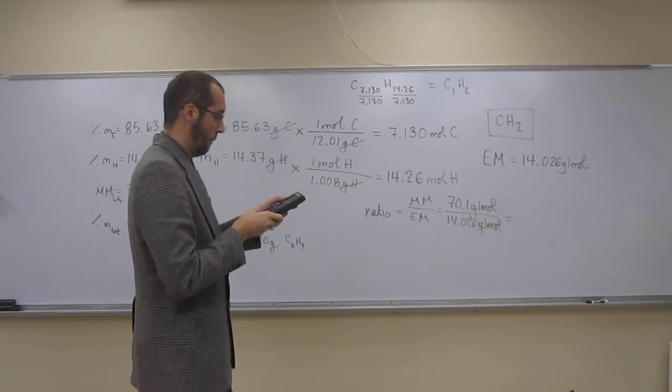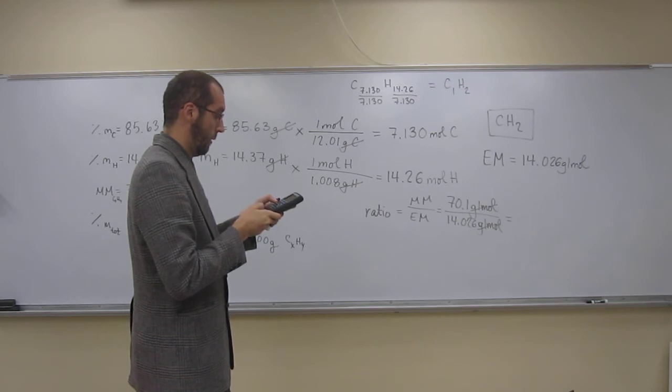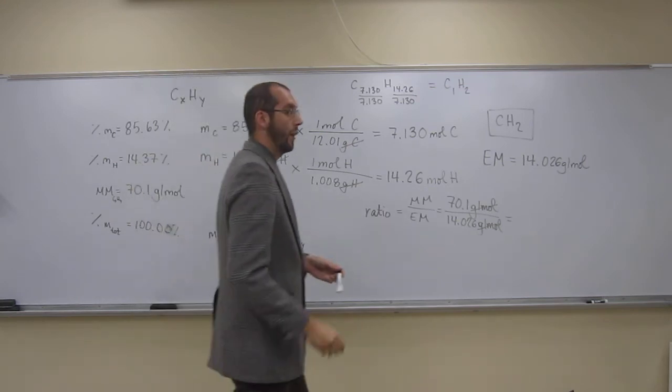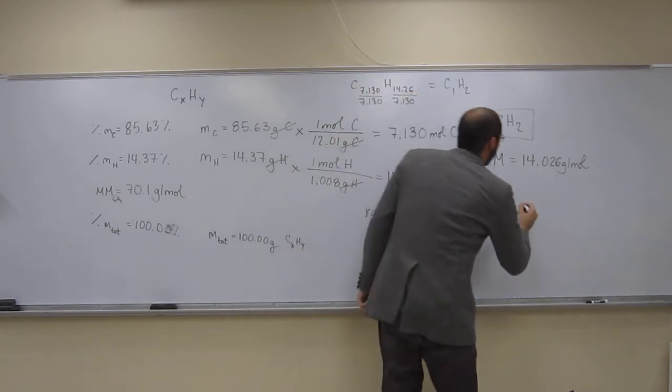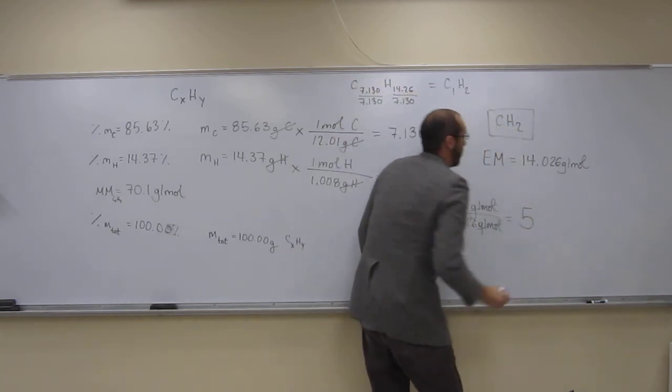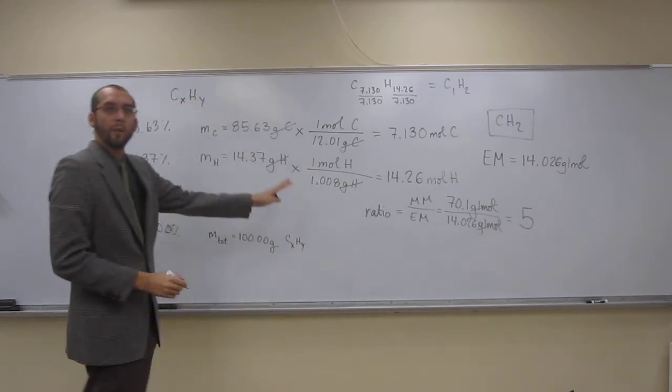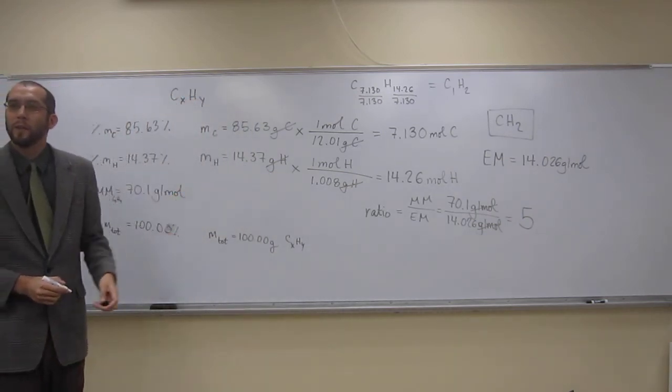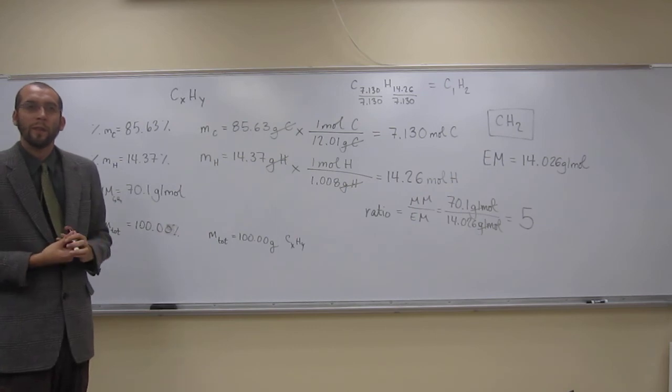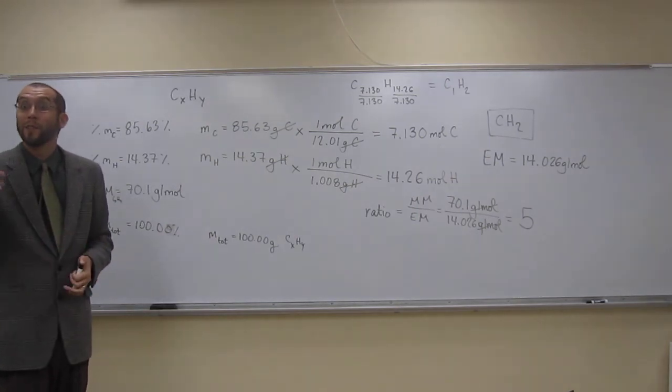So, 70.1 divided by 14.026. Yeah, 4.9978, that's essentially 5. We okay with that? Anybody not okay with what we've done so far? Everybody is okay with it. Okay, wonderful.